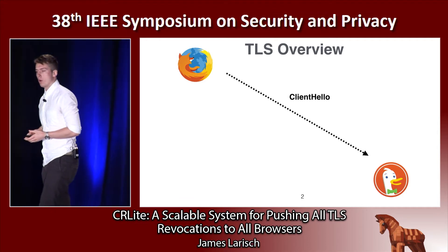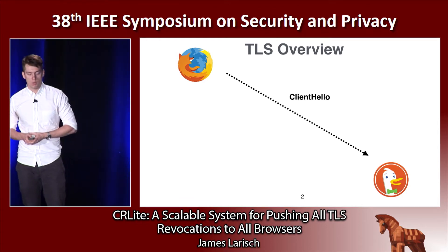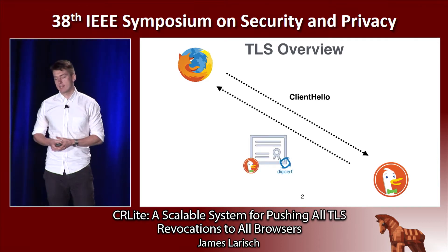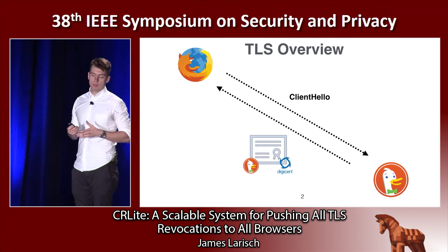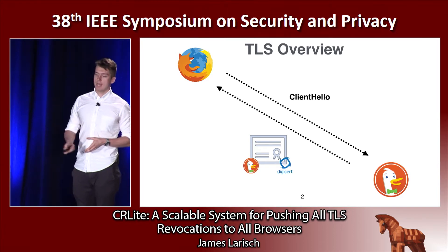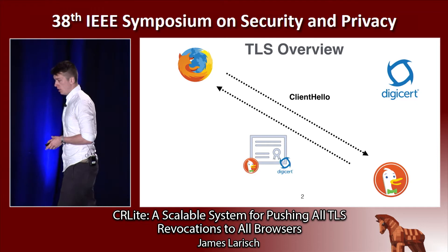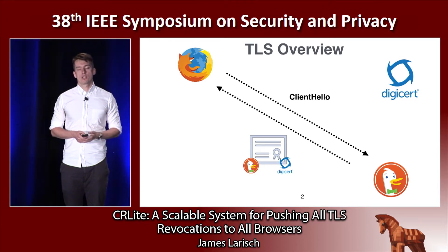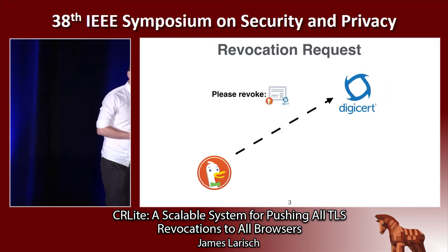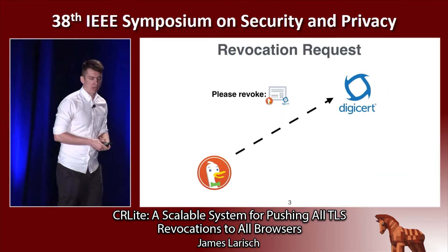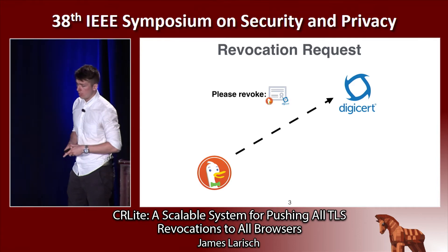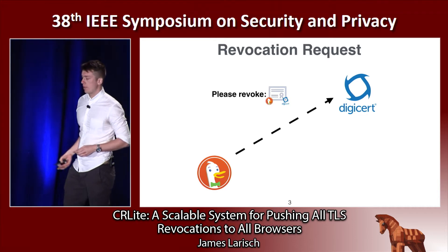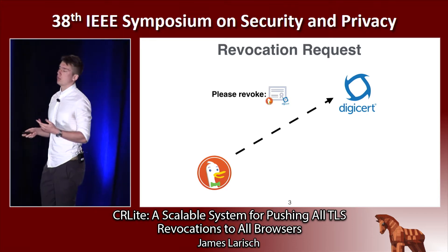The browser makes a TLS request to a website, and in response, the website sends back its TLS certificate, which includes its public key and is signed by a certificate authority. The browser trusts the certificate authority, so the browser can trust that they are talking to the real owners of the website. But let's say the website is hacked and the private key for the certificate is compromised. The website goes to the issuing certificate authority and says, please revoke my certificate, and the certificate authority does so.